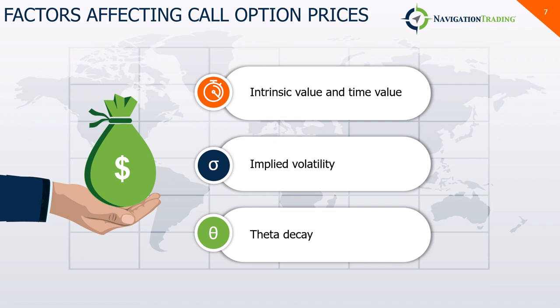Next is implied volatility, which reflects future price expectations and helps gauge the market's anticipation of future price movement. It measures the expected level of fluctuation of the underlying asset's price over the option's lifespan until expiration. When implied volatility is high, option premiums rise because options are perceived as a riskier play, and investors are willing to pay more during times of uncertainty. Looking at IV before making a decision helps you understand potential profit opportunities and gauge the market's perception of risk.